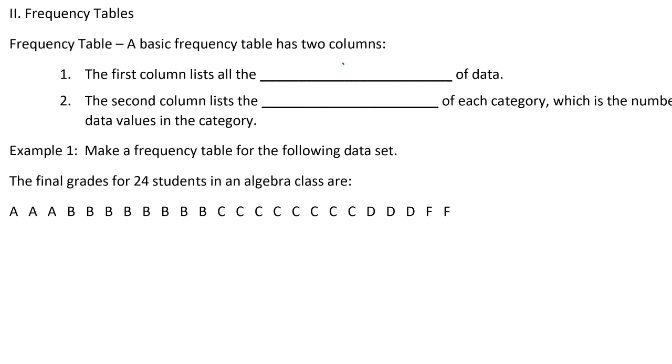So a frequency table, a basic one, just has two different columns. The first column lists all of the categories, and the second column lists the frequency. The categories are what your data actually are. So for example, if we're talking about flavors of pie that you like, then the first column categories would have things like apple, cherry, peach, pumpkin, whatever you like. The second column, the frequency, says how many people like that particular pie.